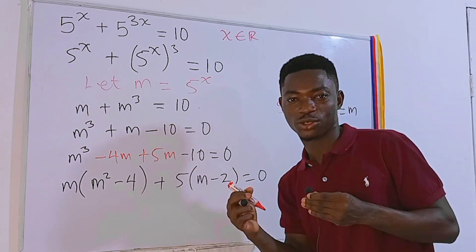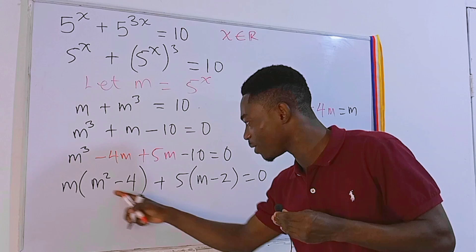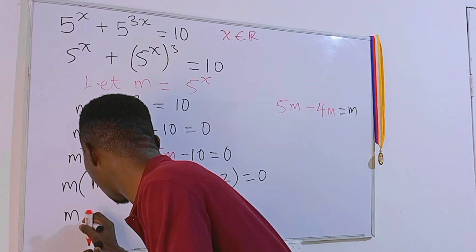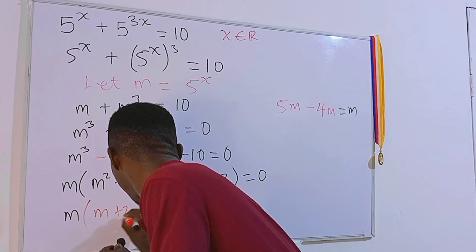Inside this parenthesis, I'm sure you know what I'm talking about when we talk about difference of two squares. Remember, this 4 is the same as 2², which makes everything difference of two squares. So we can express this as m times, let me use the red marker, difference of two squares, which is m + 2, then m - 2.